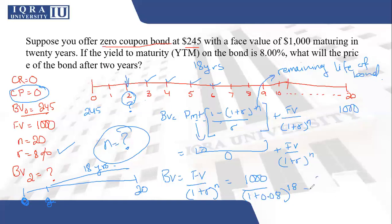So if you solve this, your answer will come to $250.25. So this bond is again a discount bond because it is trading for below the par value. So two years later, the price will be $250.25.